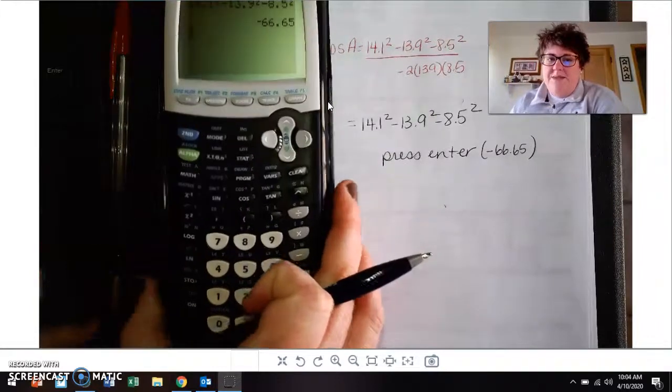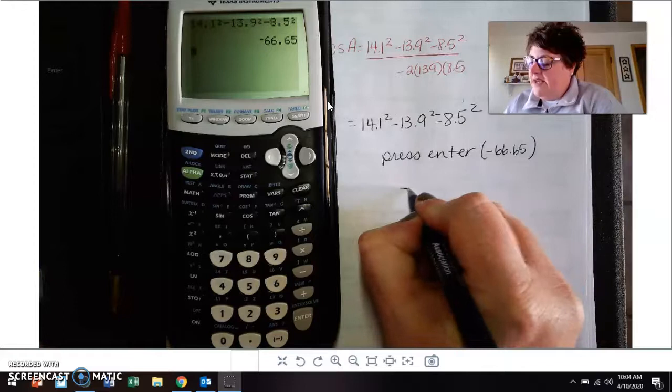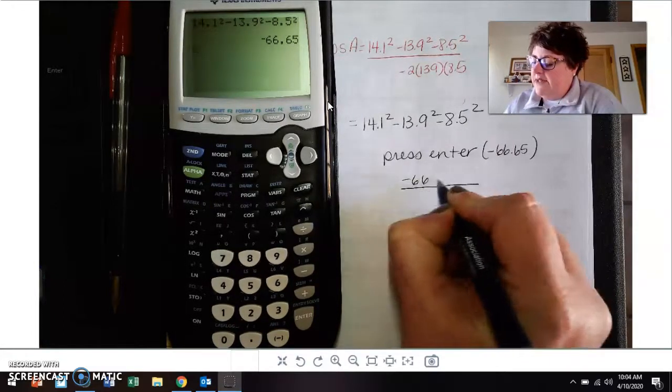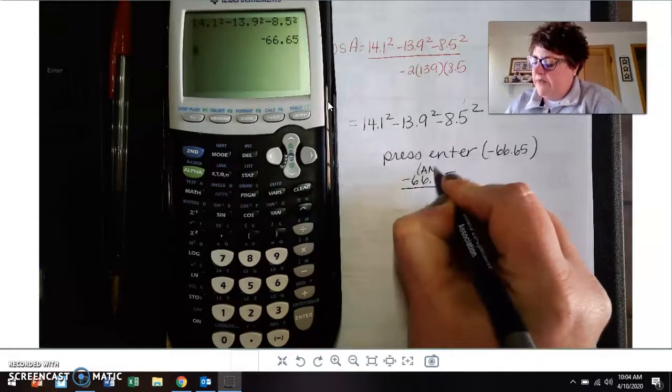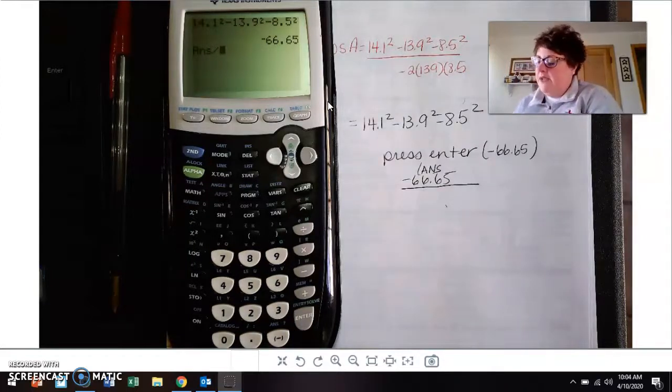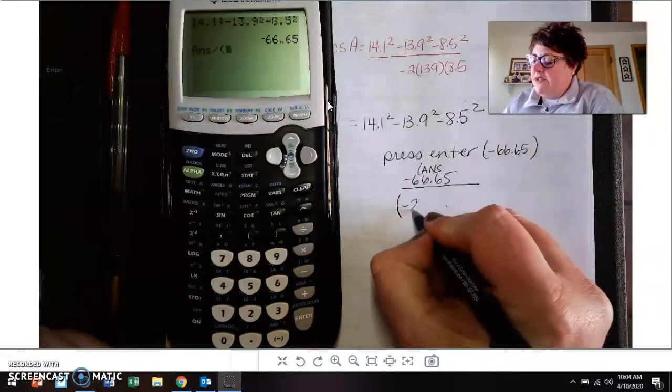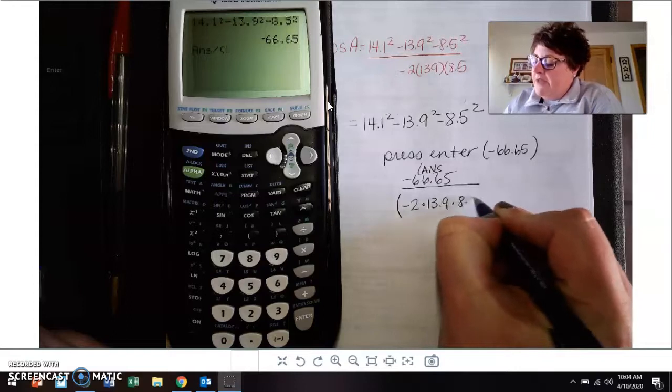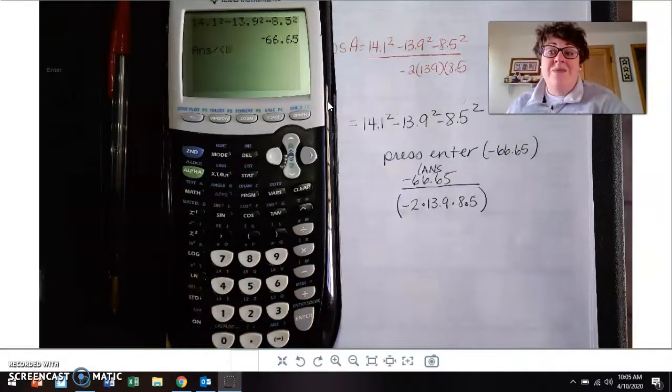So as we do this, I'm going to use that key. Now I'm going to divide my answer, so negative 66, I'm going to do my answer key. So I'm going to divide. I had the answer previously above it, and now I want to open up a set of parentheses. And then the negative 2 times the 13.9 times the 8.5. The reason I open up a set of parentheses is I want to divide the entire number by that.